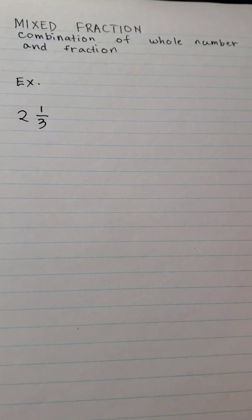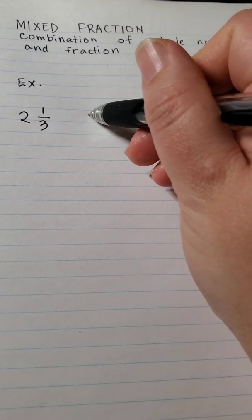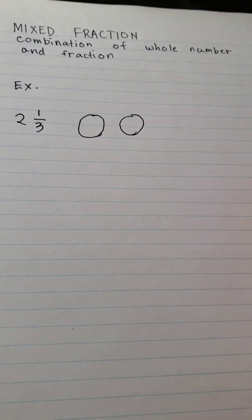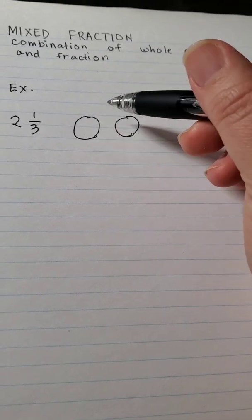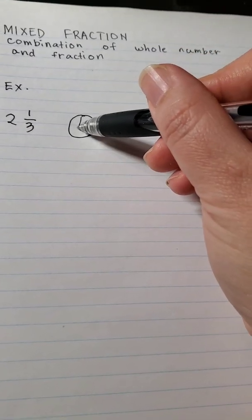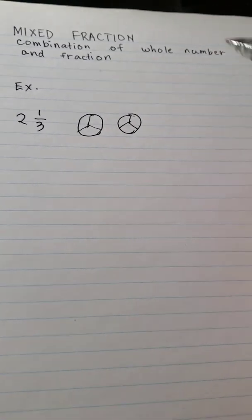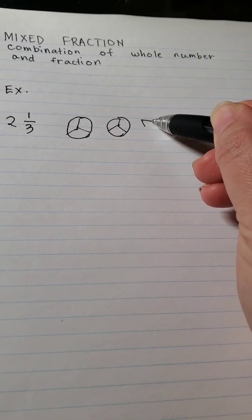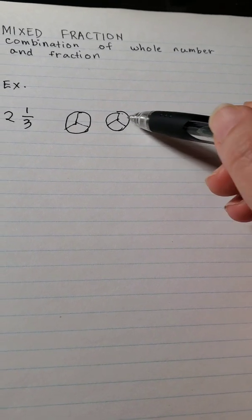So to illustrate this, we're going to draw 2 circles to represent number 2 and then this whole circle is divided into 3 parts because the denominator is 3. So it'll look like this. The third part will be, it's just a small piece, a slice, 1/3. So 1 out of 3.